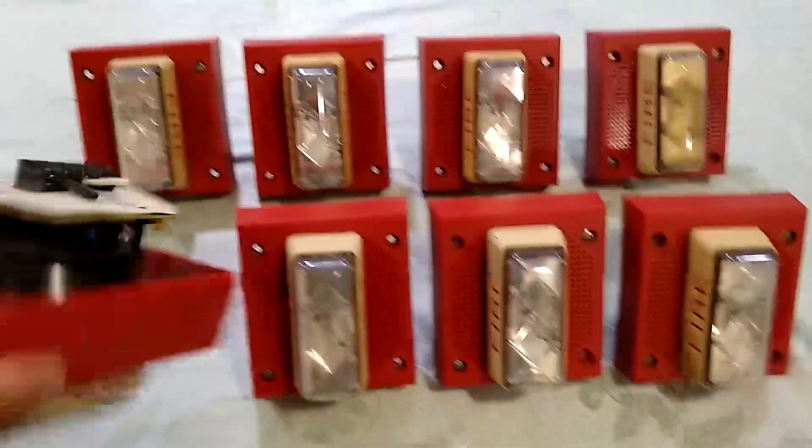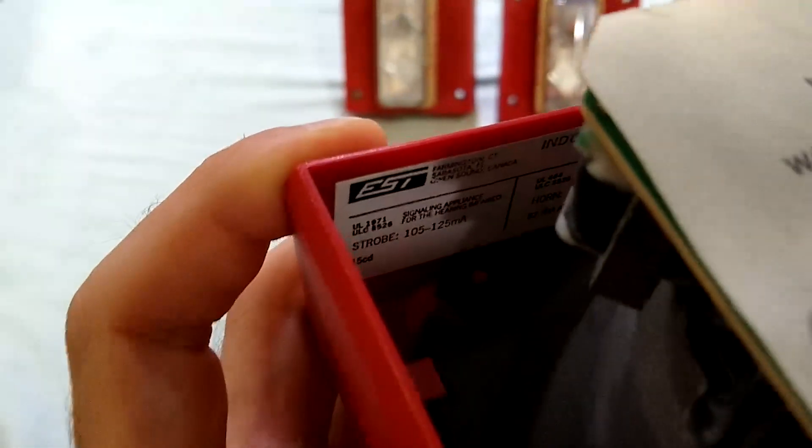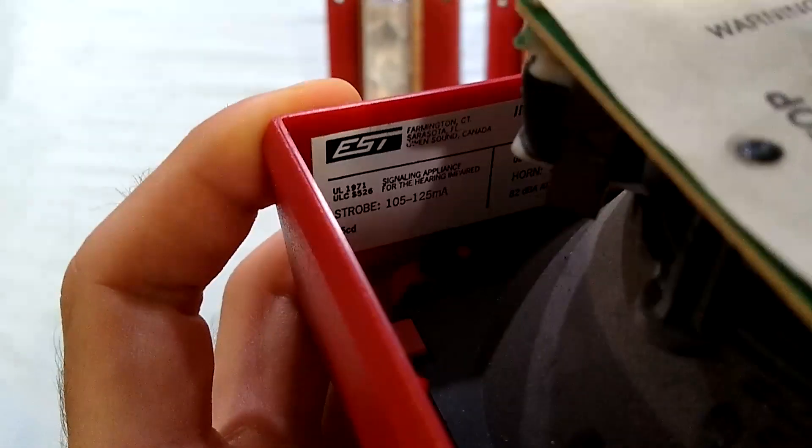The strobe on these, if we look at the tag, is 15-75 candela. So here it has the 15 candela rating. It says signaling for the hearing impaired. And this is the 75 candela rating.